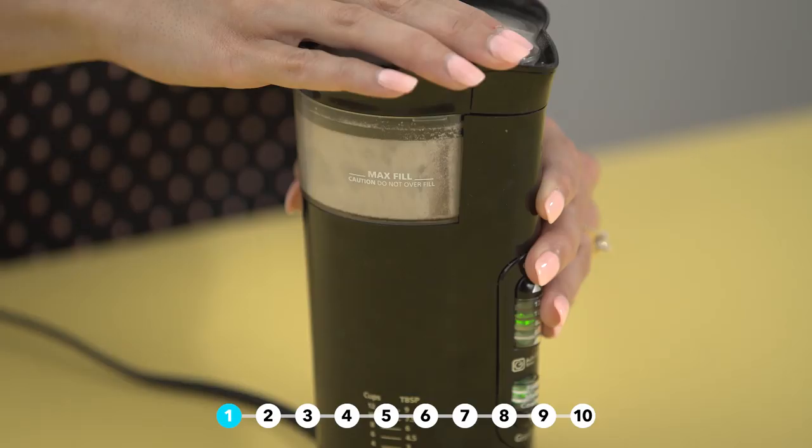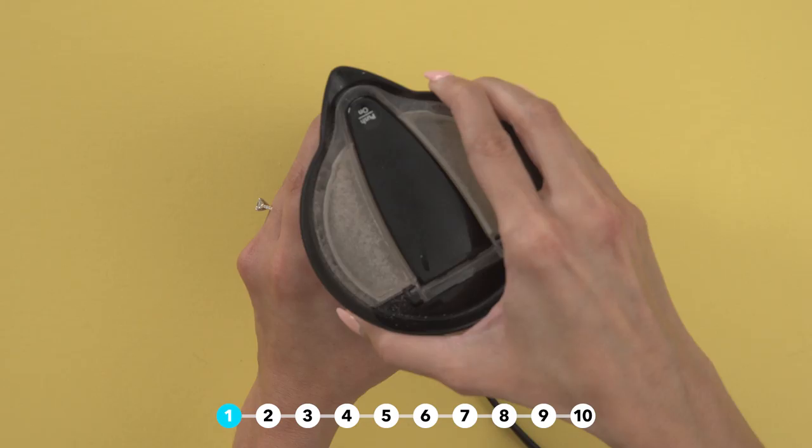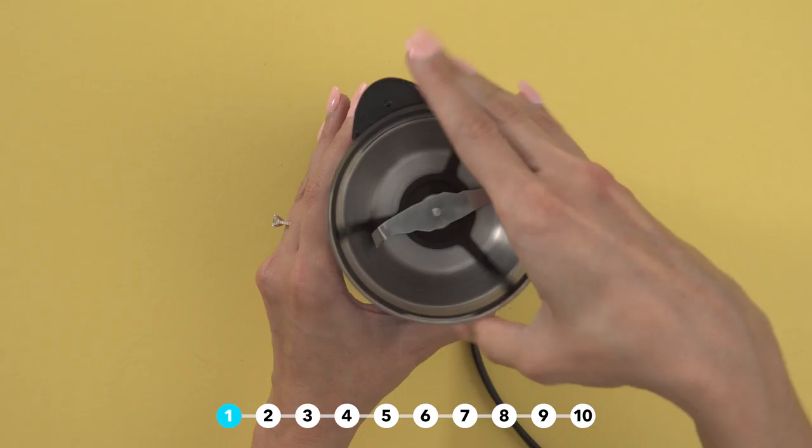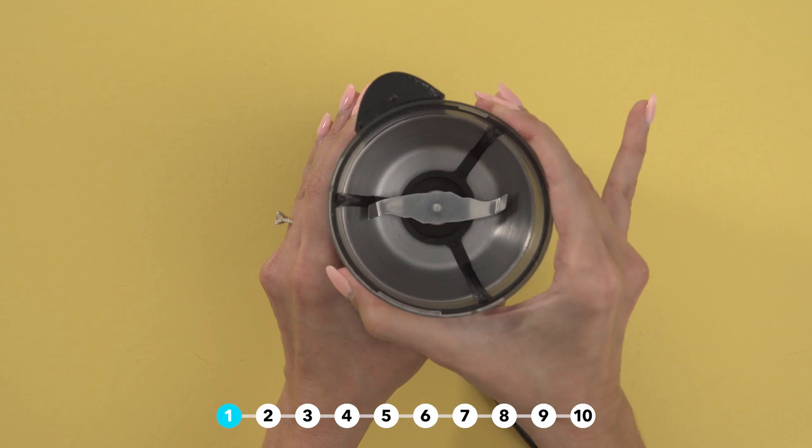Get your coffee grinder looking like new again with uncooked rice. The grains push out the dust and soak up the coffee bean oils. Bonus, it also sharpens your coffee grinder blade.